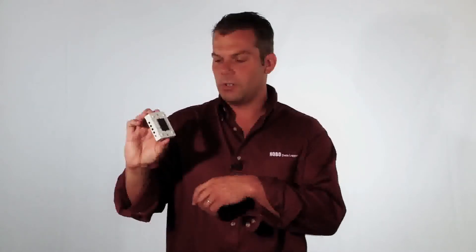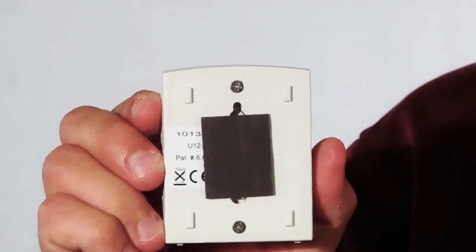The logger does have a user-replaceable battery. You unscrew the two screws on the back. The battery's good for about a year. It has the ability to record up to 43,000 measurements. In real terms, if you're recording every 15 minutes, it'll run for about 113 days. And through the HoboWare software, you can turn off channels to maximize your memory.